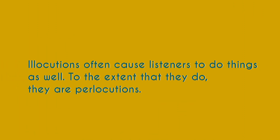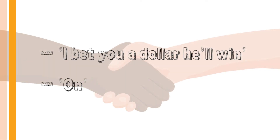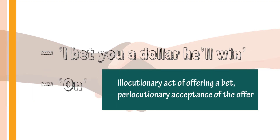Illocutions often cause listeners to do things as well. When you cause someone to close the door and that person closes the door, the illocution becomes a perlocution. For example, if you say 'I bet you a dollar he'll win' and I accept, your illocutionary act of offering a bet has led to my perlocutionary uptake of accepting. Your words had perlocutionary force — and when you succeed, that's proof of perlocution.